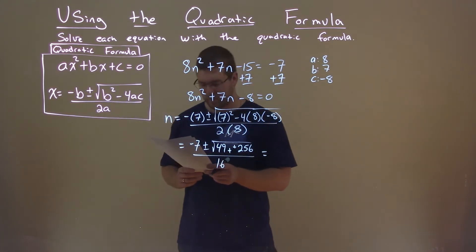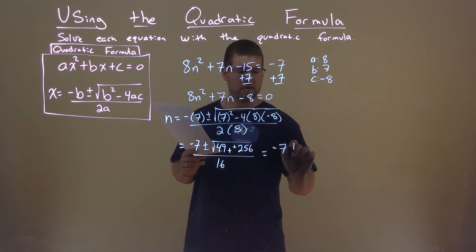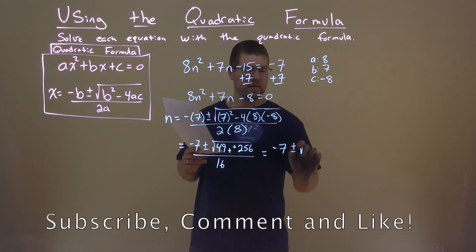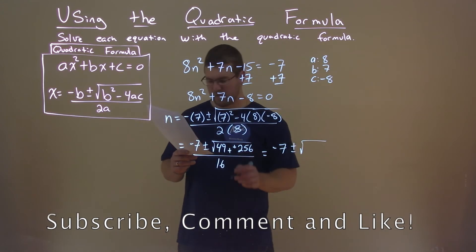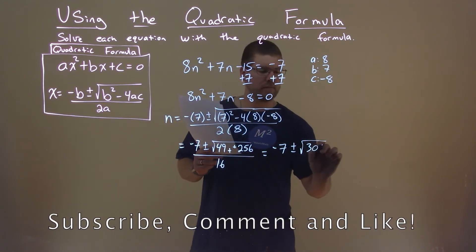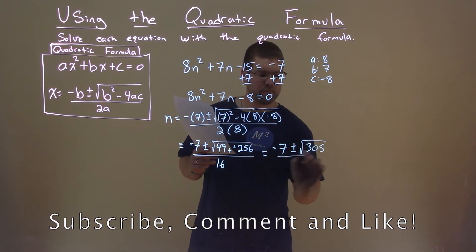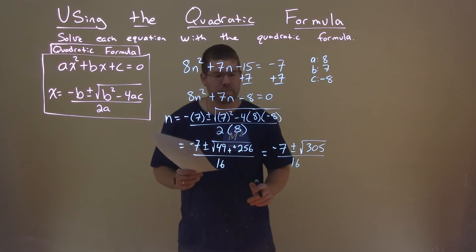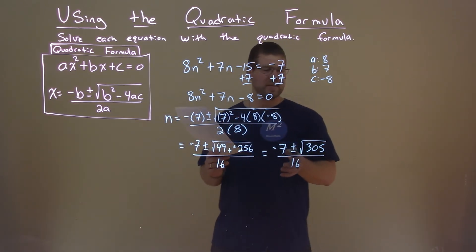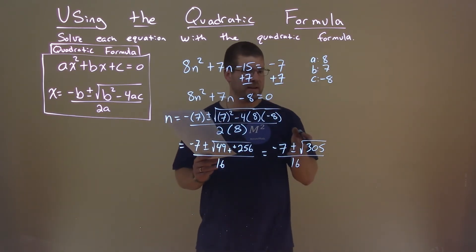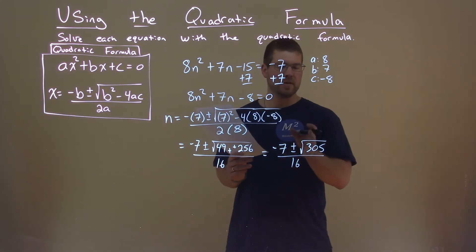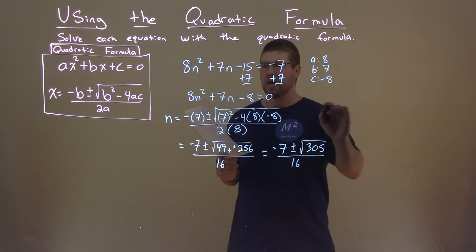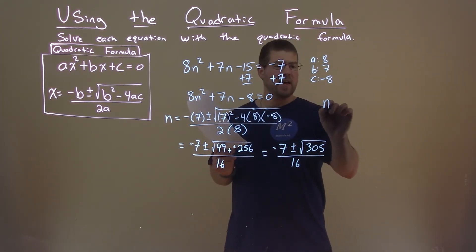So let's simplify this a little more. Negative 7 over here, plus or minus. Well, 49 plus 256 is 305, and then we have 16 down here. This doesn't really simplify any more. Square root of 305 doesn't really break down anymore. So we have n equals...